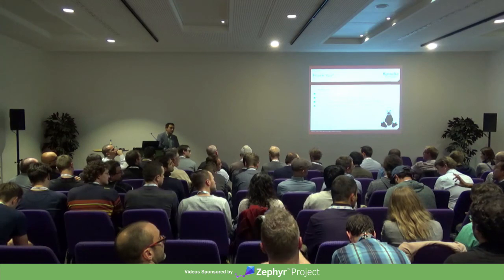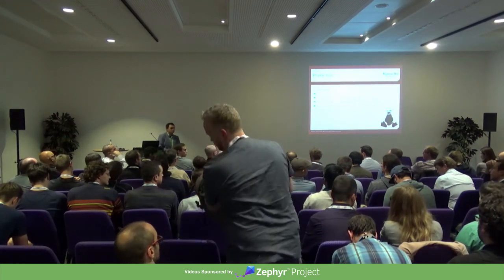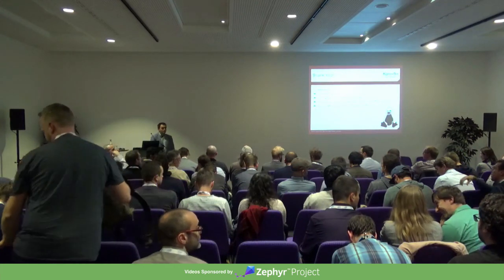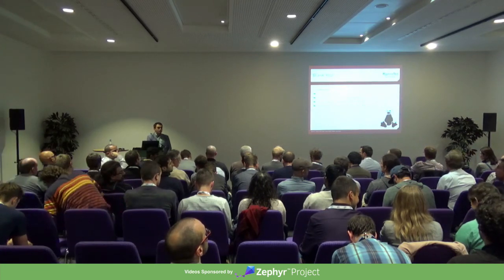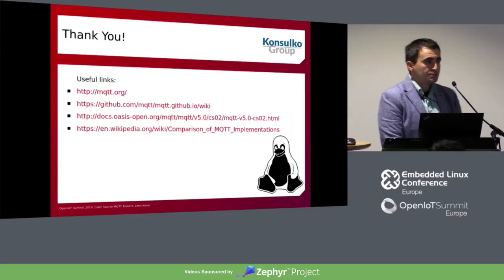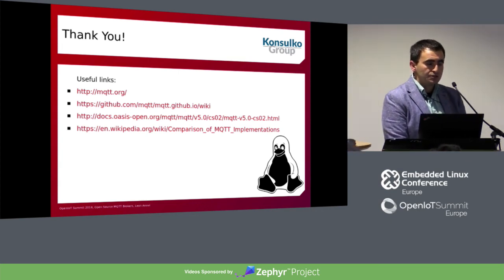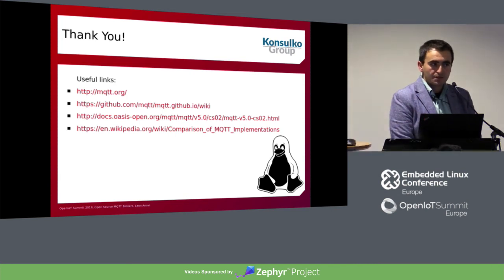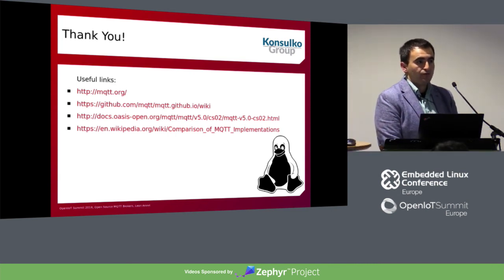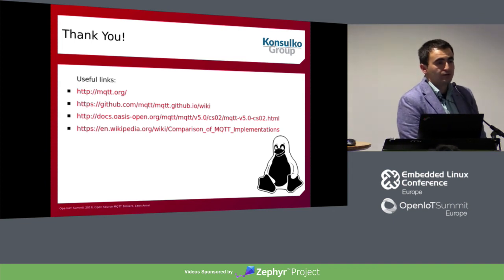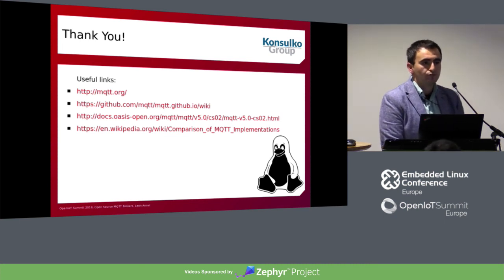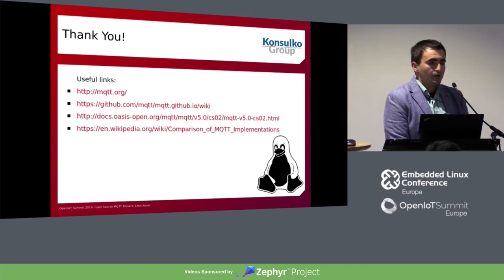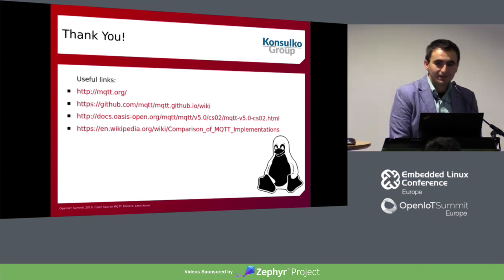Q: How about message priorities? A: This depends on the quality of service. That's why you have QoS from 0 to 2. If you want to be sure a message is delivered exactly once — especially important for factory use cases — you have to use quality of service 2. I'm afraid we're running out of time, so I would like to thank you very much for joining this presentation. I hope you enjoyed it.